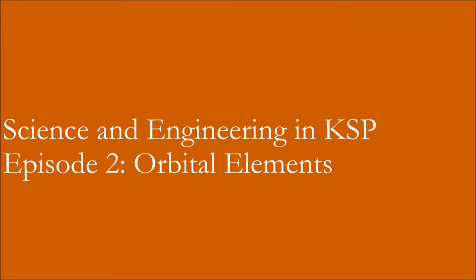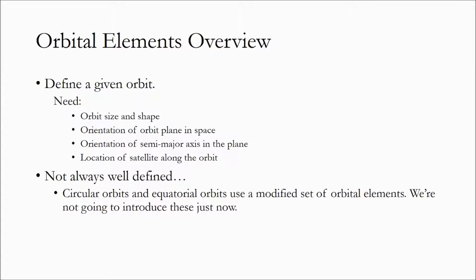Now that we know that the orbits in KSP are Keplerian, we need a way to talk about them, and that's going to be our focus today. For orbital elements, their goal is to define a given orbit, and we need six different parameters to do that fully. We need to know the orbit size and shape, the orientation of the orbit's plane in space, the orientation of the semi-major axis in the plane, and the location of the satellite along the orbit.